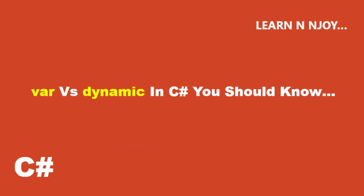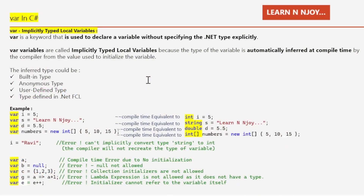Without any further delay, let's get started. The var keyword in C# — before learning about the differences between var and dynamic keywords, we first learn what they are. var is a keyword that is used to declare a variable without specifying the .NET type explicitly. var variables are called implicitly typed local variables because the type of variable is automatically inferred at compile time by the compiler from the value used to initialize the variable. The inferred type could be a built-in type, anonymous type, user-defined type, or a type defined in the .NET Framework class library.